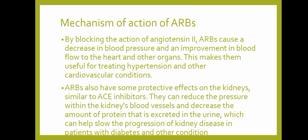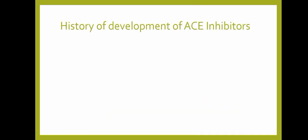By blocking the action of angiotensin 2, ARBs cause a decrease in blood pressure and an improvement in blood flow to the heart and other organs, making them useful for treating hypertension and other cardiovascular conditions. ARBs also have protective effects on the kidneys similar to ACE inhibitors. They can reduce the pressure within the kidneys' blood vessels and decrease the amount of protein excreted in the urine, helping to slow the progression of kidney disease.